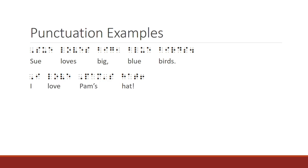The second sentence is: I love Pam's hat. In this sentence, there are two capital indicators. The first is before the I and the second is before the P in Pam. There is also an apostrophe before the S in Pam's and an exclamation mark at the end. Again, the spacing for the apostrophe is the same as print. There is no space before or after the apostrophe.